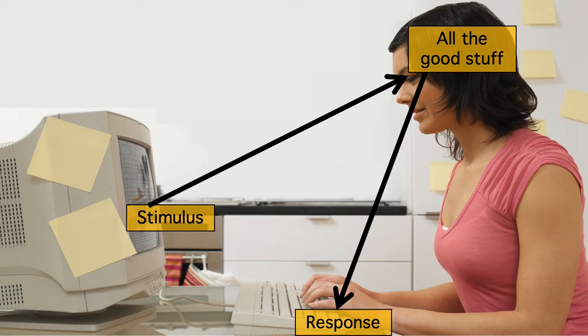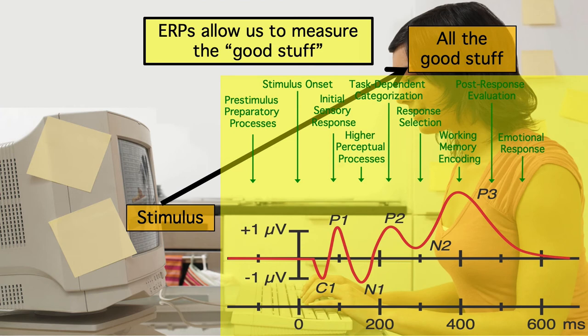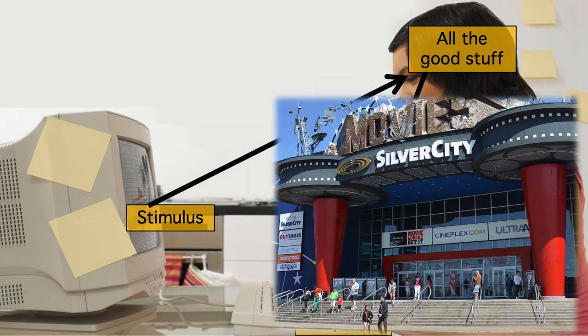It's like waiting outside a movie theater and asking people how the movie was after it's over — we want to see the movie. ERPs allow us to see the good stuff because they provide a continuous signal while the good stuff is happening, millisecond by millisecond. It's like watching the movie itself. Maybe it's a blurred version of the movie, but it's better than polling the audience after the movie is over.